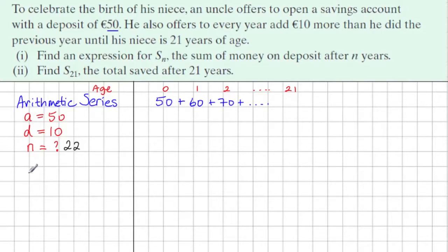Now the question says, find an expression for S of N. Now since it's an arithmetic series, the formula is that the sum of N is equal to N over 2 times 2A plus N minus 1 times D. And this is given in the log tables.